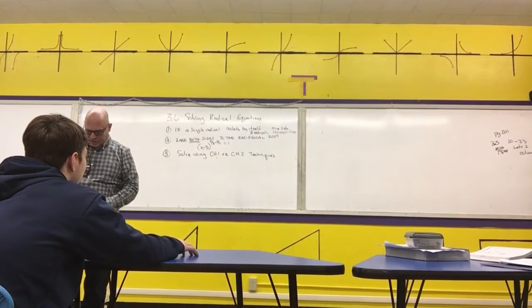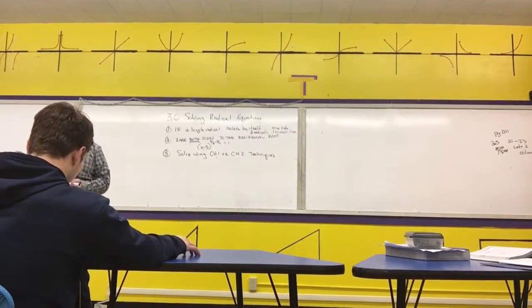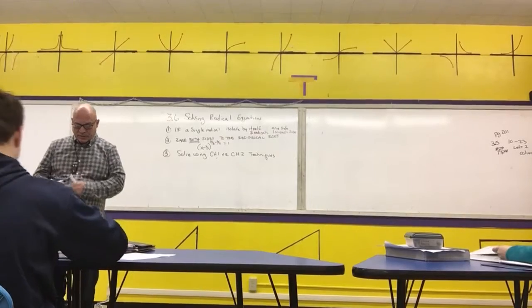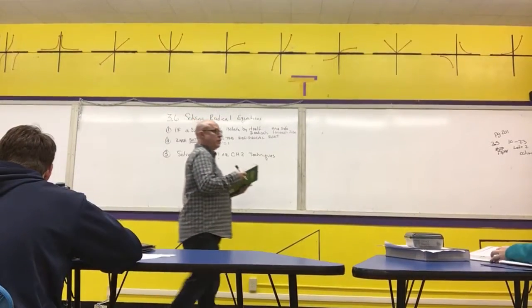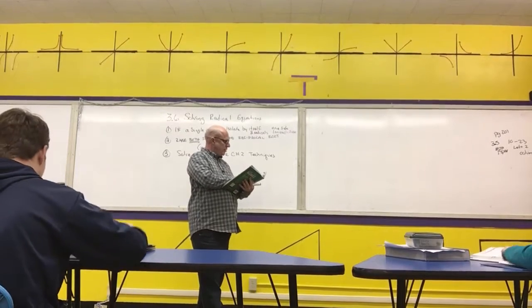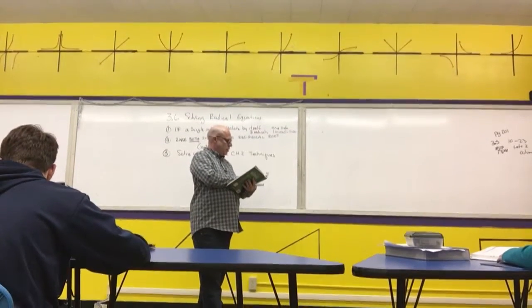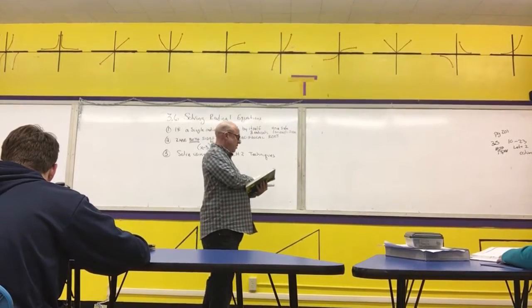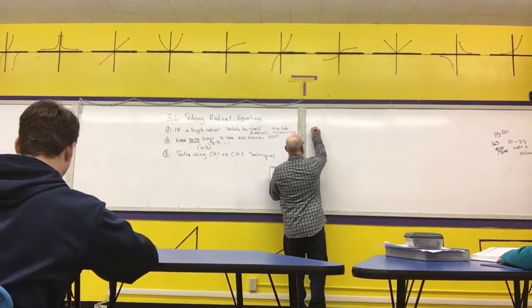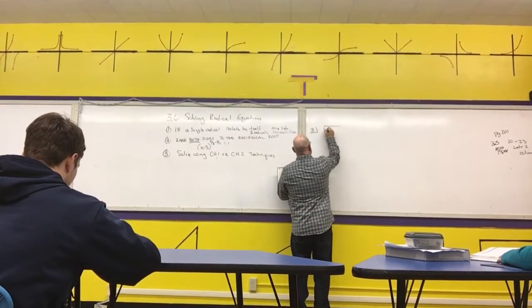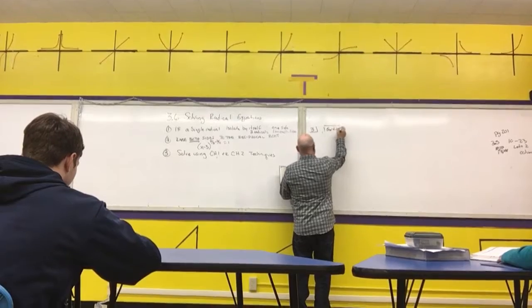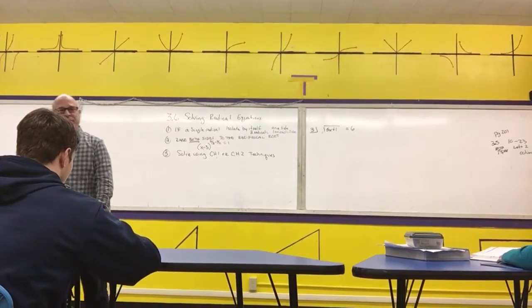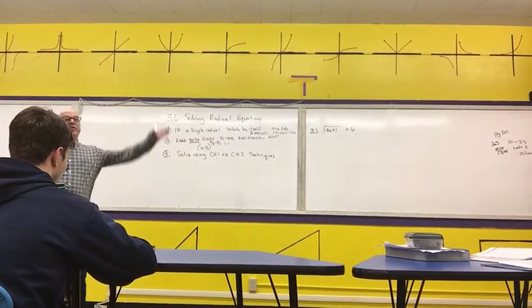I would like everybody to please turn to page 208. Problem number five. Let's do problem three first. Square root of 5x plus 1 equals 6. Step one is to get the radical by itself on one side of the equation. I'm already there. Do you agree with that?